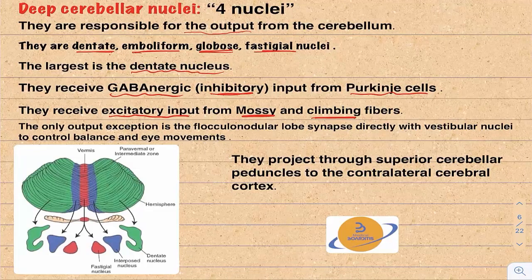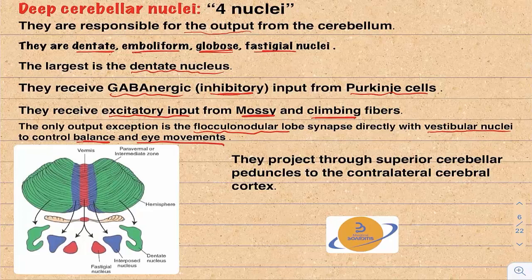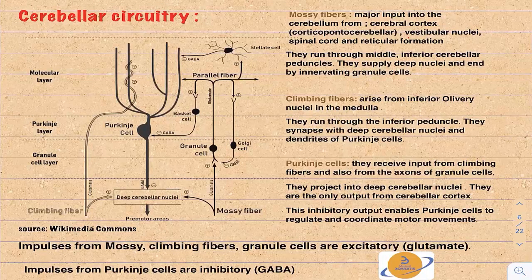The only exception to this output role is the flocculonodular lobe, which synapses directly with the vestibular nuclei to control balance and eye movements. The output from the deep cerebellar nuclei projects through the superior cerebellar peduncle into the contralateral cerebral cortex — sometimes called the dentato-thalamocortical tract.